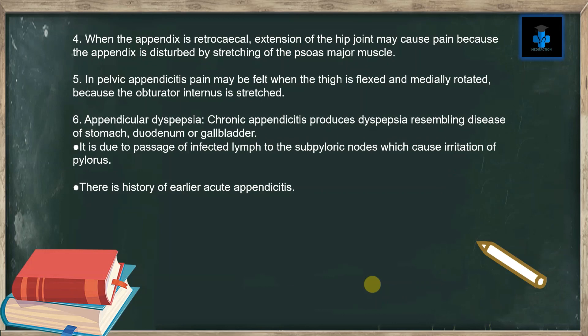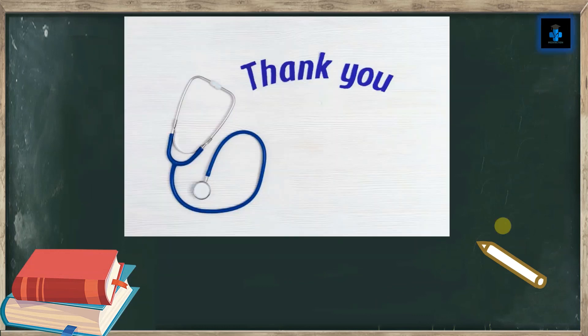In pelvic appendicitis, pain may be felt when the thigh is flexed and medially rotated because the obturator internus is stretched. Appendicular dyspepsia: chronic appendicitis produces dyspepsia resembling disease of the stomach, duodenum, or gallbladder. It is due to passage of infected lymph to the sub-pyloric nodes, which causes irritation of the pylorus. There is usually a history of earlier acute appendicitis. Hope you have understood the video — like, subscribe and press the bell button for more videos. Thank you!